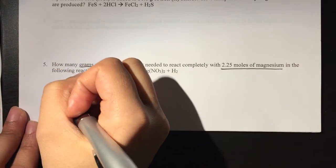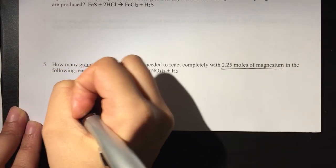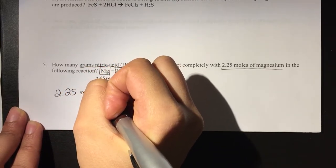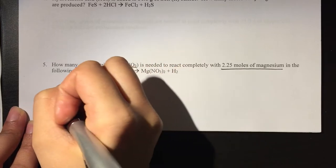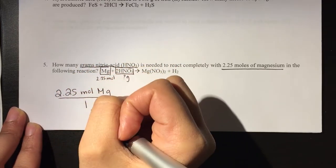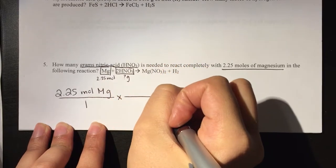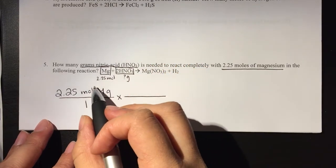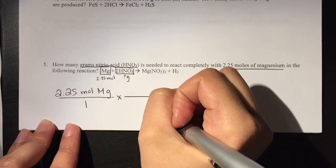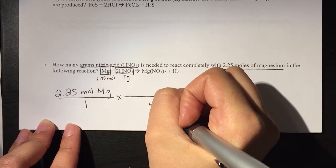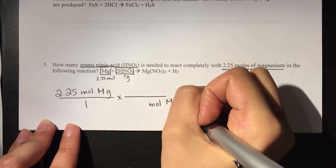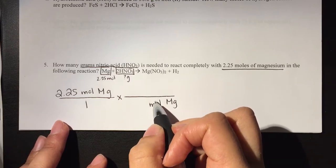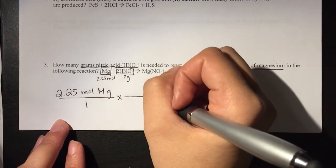So if we set this up, we have 2.25 moles. I'm going to put what we start with over 1, and then we are going to copy our unit below. So if I have moles of magnesium, you're going to have moles of magnesium up here.